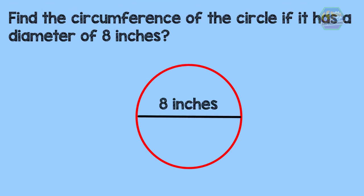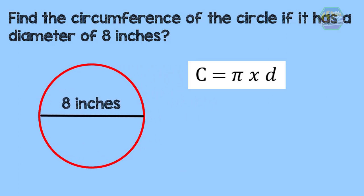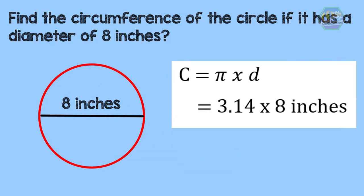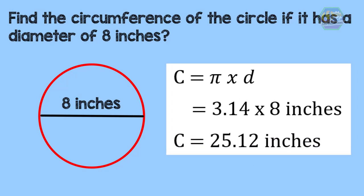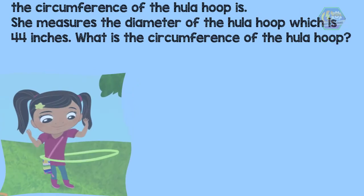Let's have an example. Find the circumference of a circle with a diameter of 8 inches. The diameter is given, and we know the formula, so let's write it down and plug in the values. Using 3.14 as the value of pi, times the diameter of 8 inches, we get: C = 3.14 × 8 = 25.12. Therefore, the circumference of the circle is 25.12 inches.